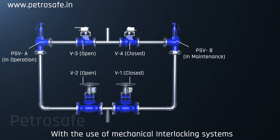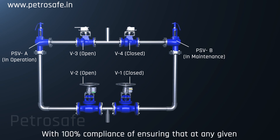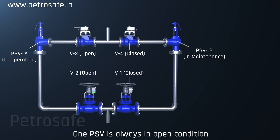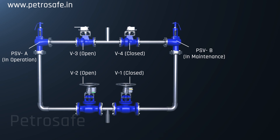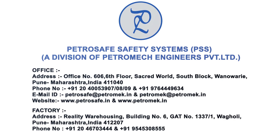Conclusion: With the use of PetroSafe mechanical interlocking systems, the critical operation of the PSV system is completed with 100% compliance, ensuring that at any given point during the PSV switchover procedure, one PSV is always in open condition. This guarantees: 1. Elimination of human error. 2. Safety of operator and plant. 3. Strict compliance of the operation as per the predefined sequence. PetroSafe safety systems — your key to safety.